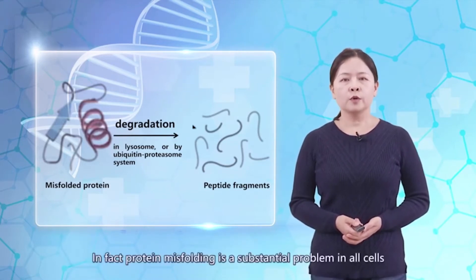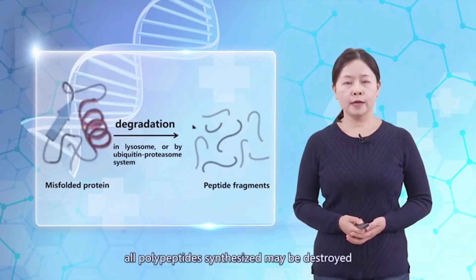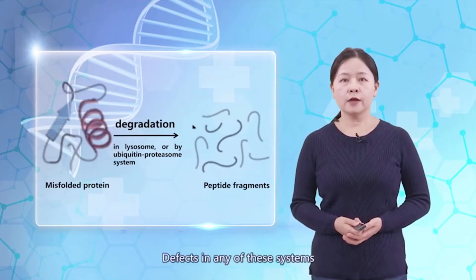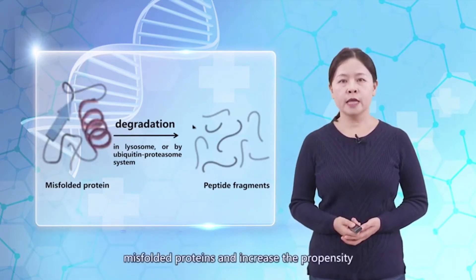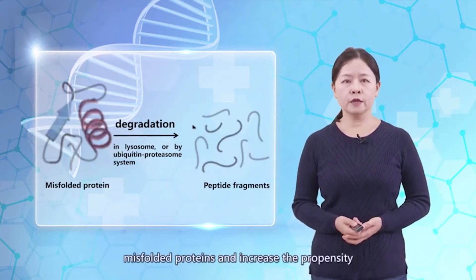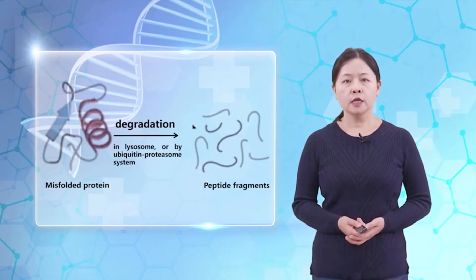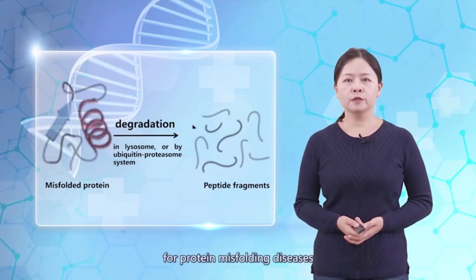In fact, protein misfolding is a substantial problem in all cells, and a quarter or more of all polypeptides synthesized may be destroyed because they do not fold correctly. Defects in any of these systems decrease the capacity to deal with misfolded proteins and increase the propensity for development of misfolding-related diseases. This system is an attractive drug target for protein misfolding diseases.